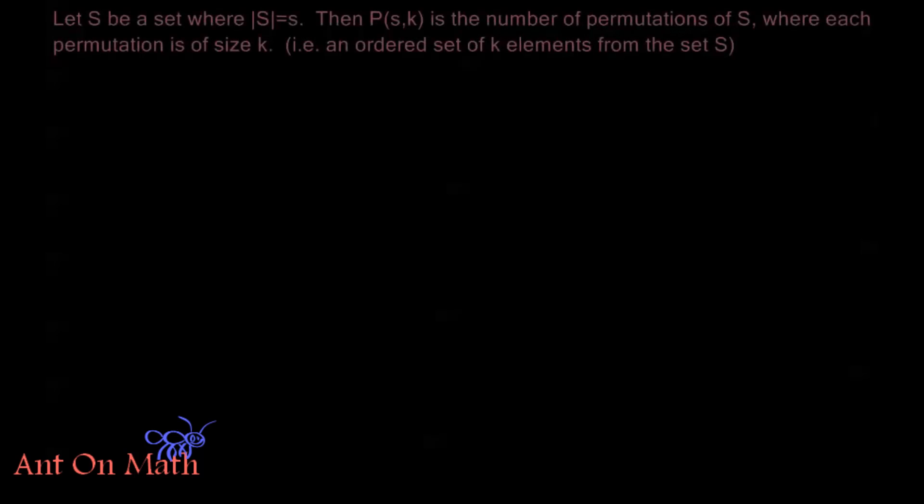So in this video we're going to look at the number of permutations of subsets of S, or of smaller permutations where all of the elements in the permutation are taken from the set S. So let S be a set where the order of S equals s. Recall that this notation just means that there are s elements in the set S, s being a number, S being a set. Then P(s,k) is a function that is going to give us the number of permutations of S where each permutation is of size k. In other words, we're going to look at the number of ways we can have ordered sets of k elements from the set S.